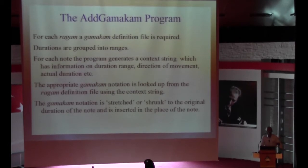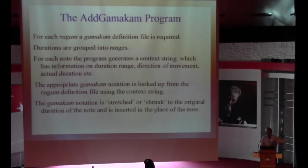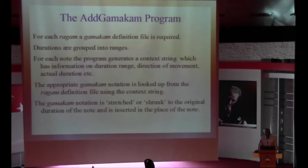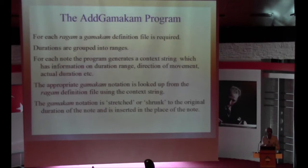My program reads the notation and generates a context string which contains the information — whether it is going up or going down, turning at the note, etc. Then I have generated a gamakam diversion file for each context and each duration. The actual duration could be anything because tempo is not fixed. I have grouped into 5 or 6 ranges, but the program allows you to change the ranges. When you run the program it looks up that file and takes out the gamakam notation, which then has to be shrunk or stretched to the actual duration of the note — otherwise rhythm will go off.